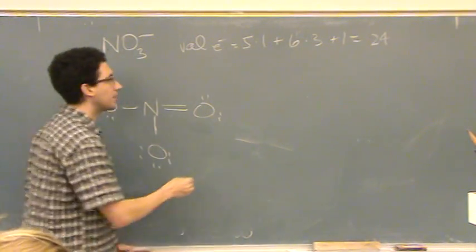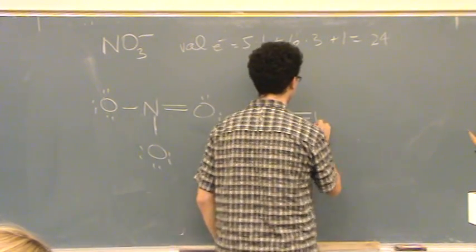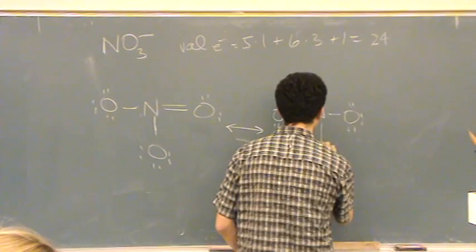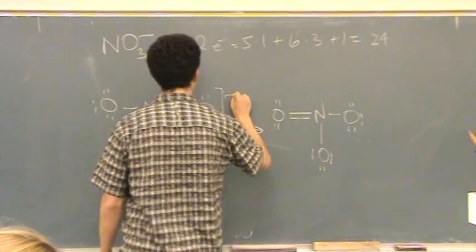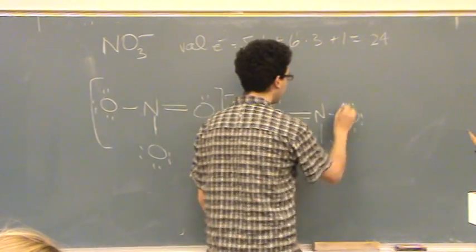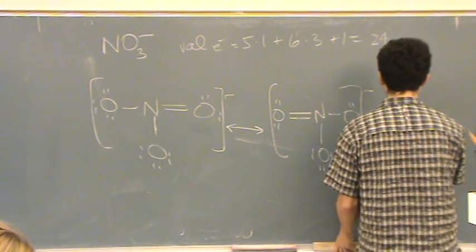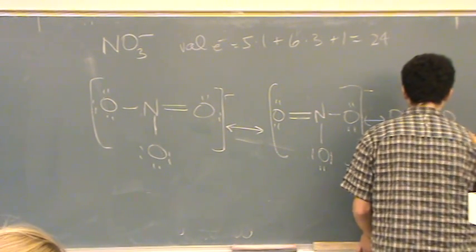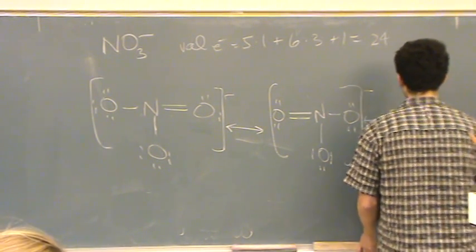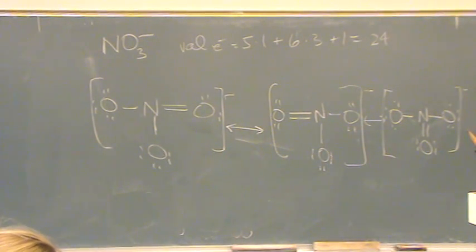I could have a resonance structure to this if I wanted to fix it with the oxygen on the left-hand side. Or, I could have another resonance structure if I wanted to fix it with a different oxygen. Say the oxygen on the bottom. So those are three resonance structures.